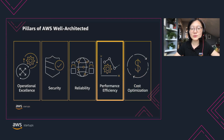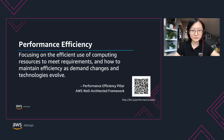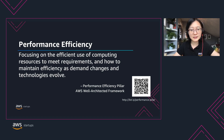Performance efficiency is one of the five pillars of the AWS Well-Architected Framework. If you're not aware of the AWS Well-Architected Framework and Review, you can watch the overview video of the series. The performance efficiency pillar is about focusing on using efficient computing resources to meet your requirements and being able to maintain the efficiency as your requirements change or technology evolves.